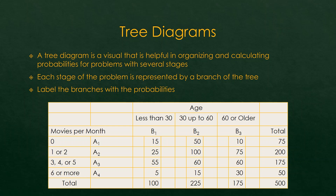We are looking at the number of individuals that are less than 30 years of age, 30 years and up, or 60 years or older. And we are looking at the movies that they watch per month: zero movies, one to two movies, three to five movies, or six or more movies. So we need to break this up.